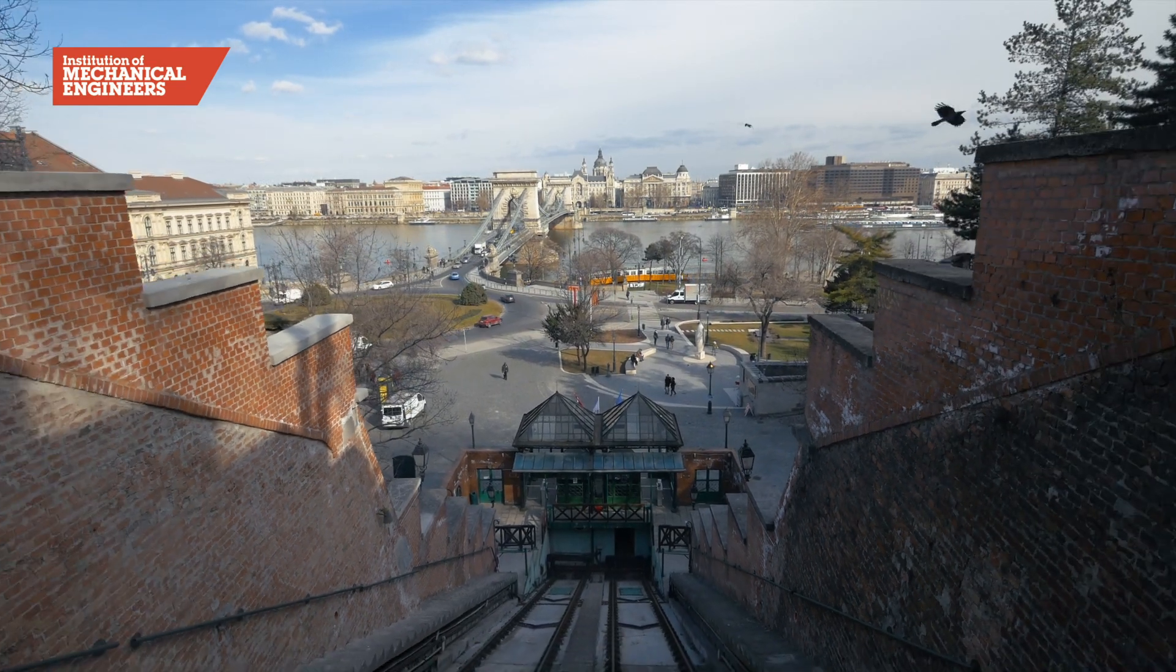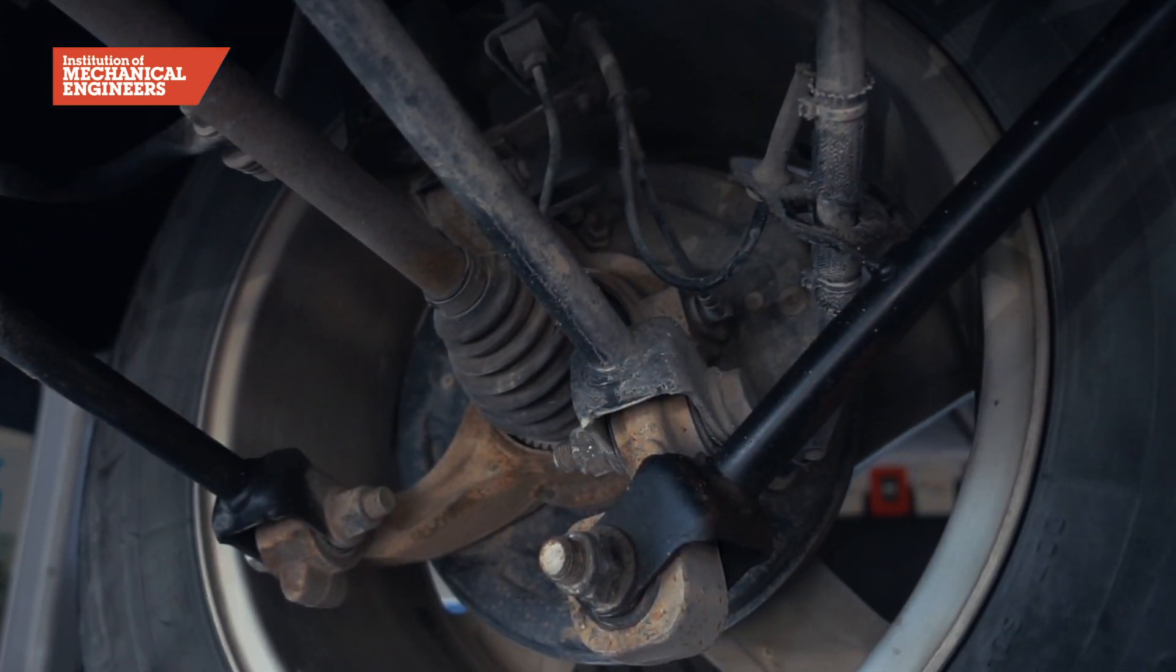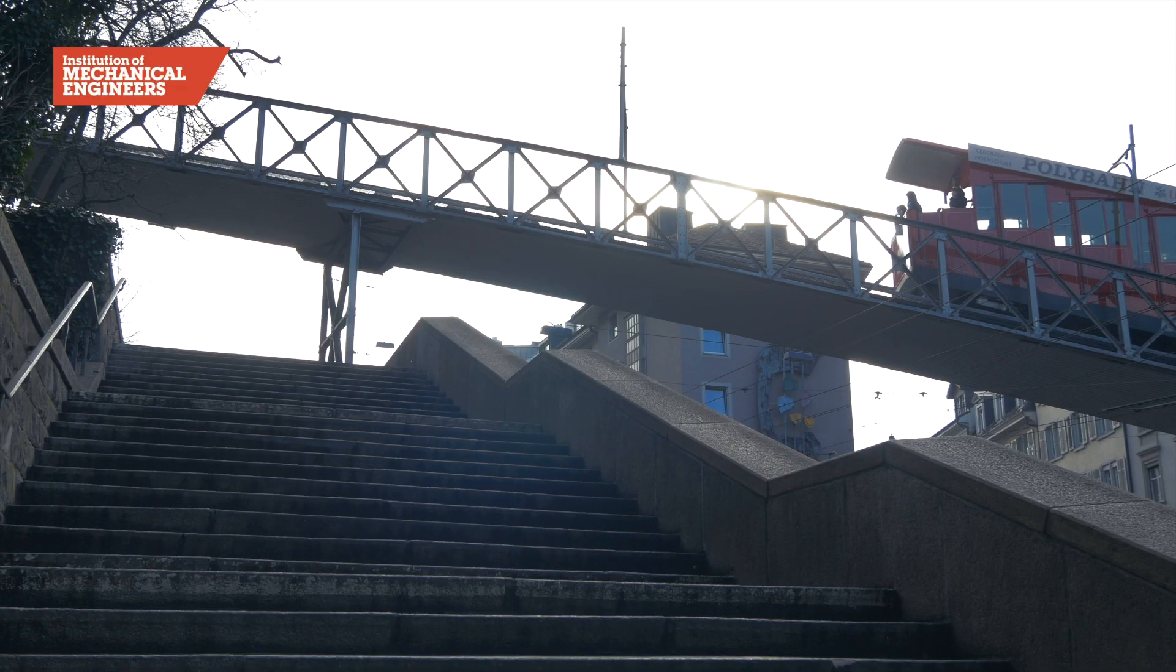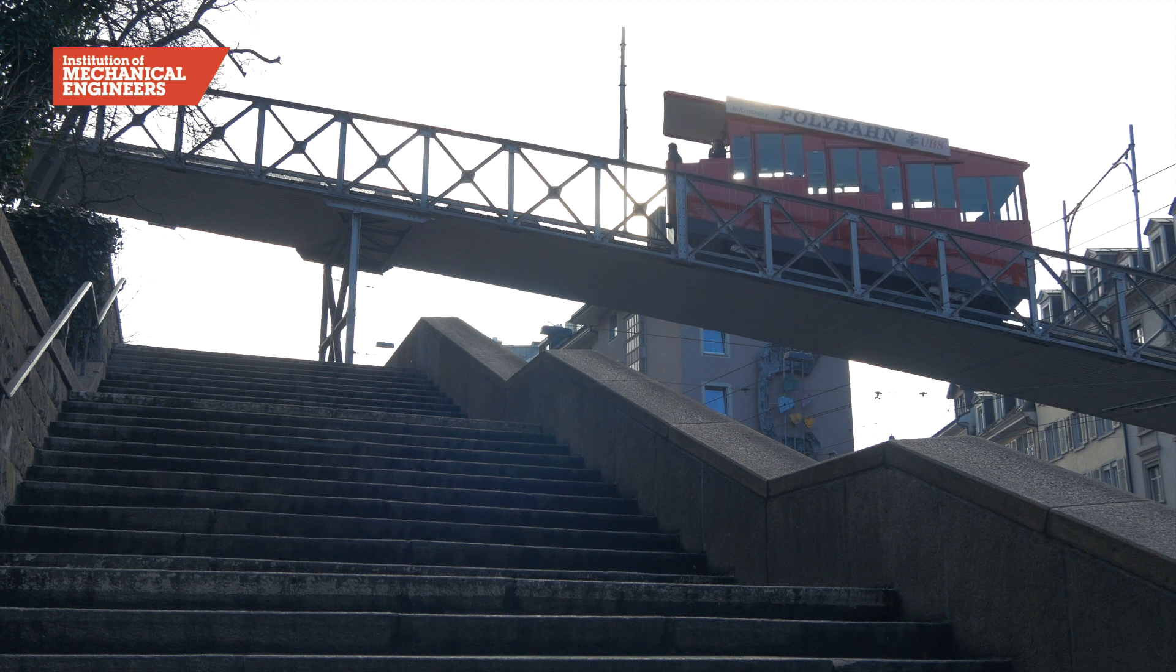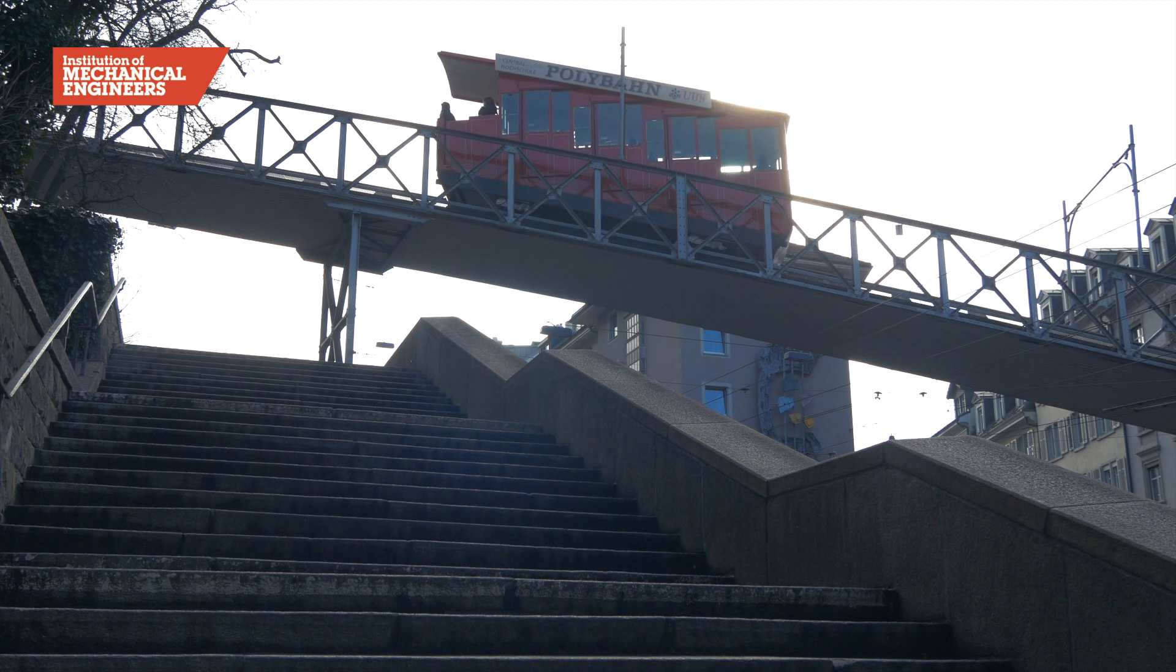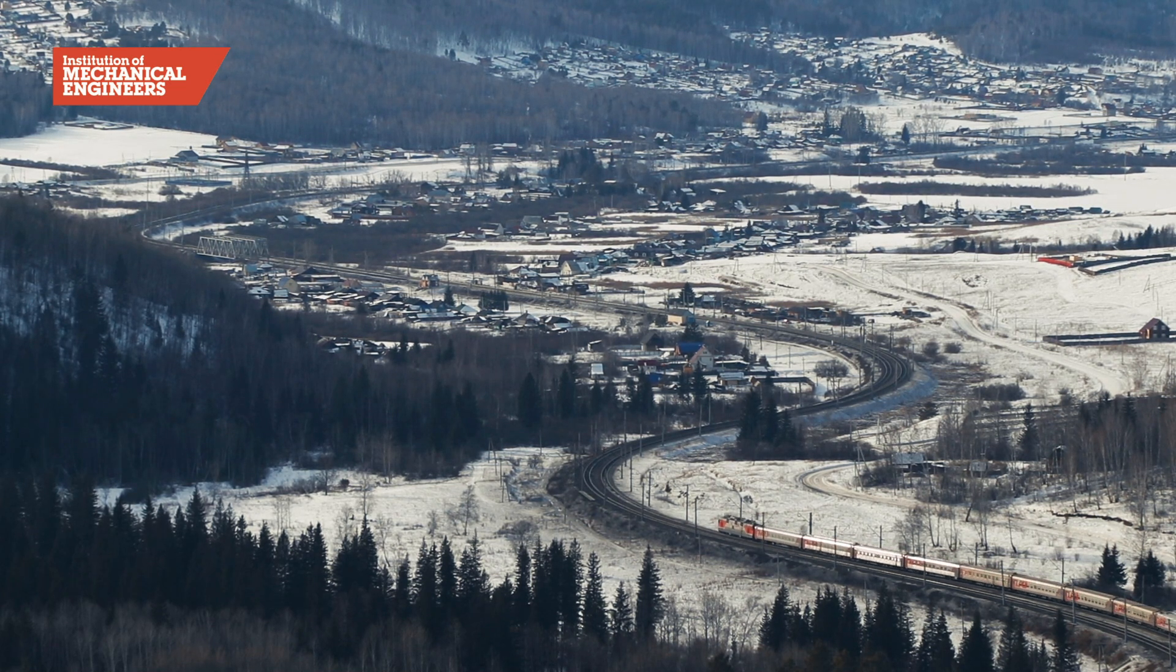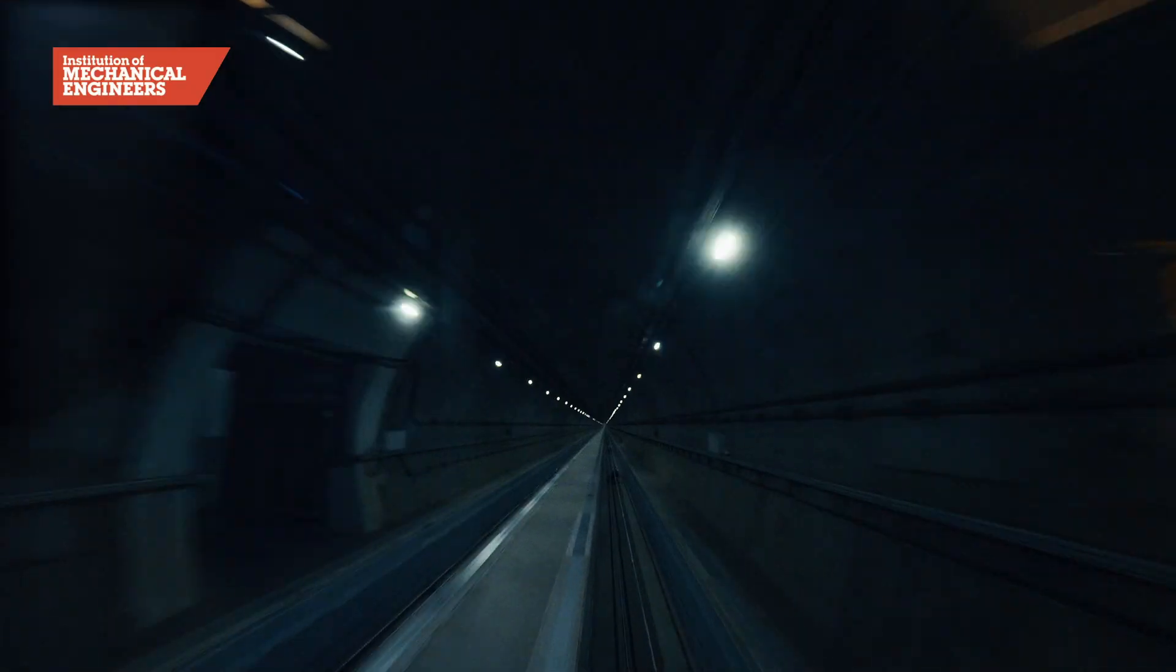Conventional trains which use steel wheels on a steel track could never efficiently climb slopes as steep as a funicular railway. This is because the wheels would struggle to get traction. When this type of train arrives at a hill or mountain it will often need to take a winding path, go around the mountain or even tunnel through.